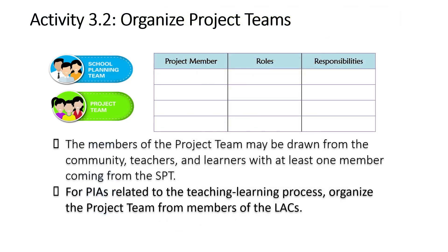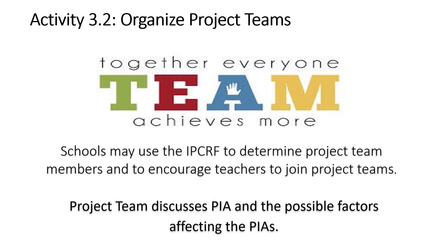Next step is to organize your project teams. The project team may be drawn from the community, teachers, and learners, with at least one member coming from the SPT. For PIAs related to the teaching-learning process, organize the project team from the members of the learning action cells. The project members should be someone very close to the process that you want to improve. The school planning team is the overall overarching team looking to do the planning process. However, the project team is now focused on a specific priority improvement area. Schools may use the IPCRF to determine project team members and to encourage teachers to join project teams.